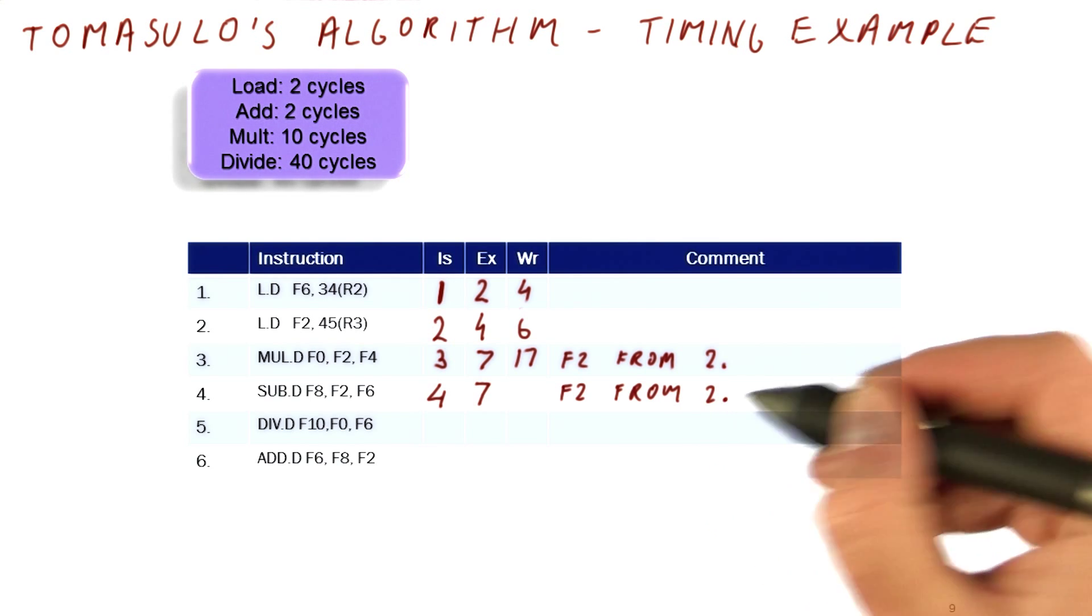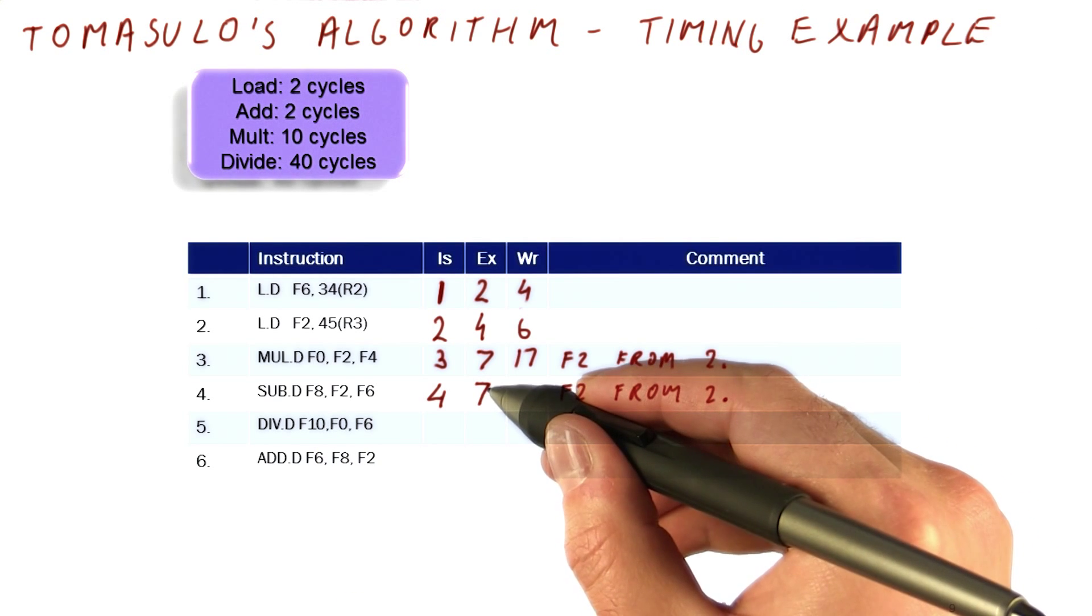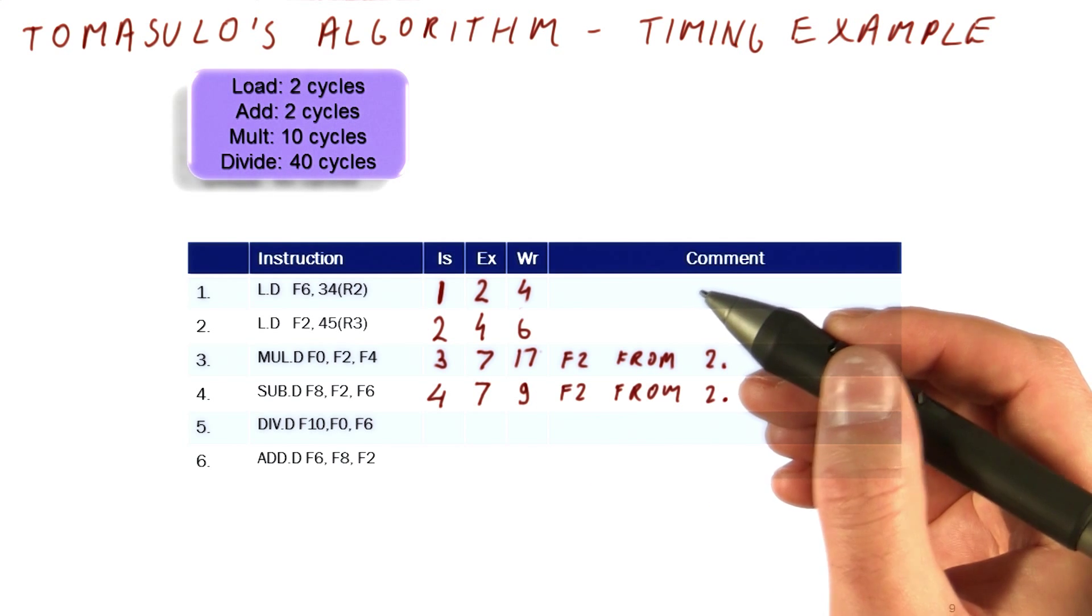And we will mark here again that we are waiting, just to give an indication of what was the delay somewhere. And then it's a subtract, so it's going to finish in cycle seven, eight. So it's going to try to write the result in nine.